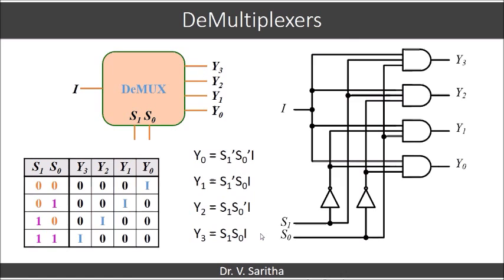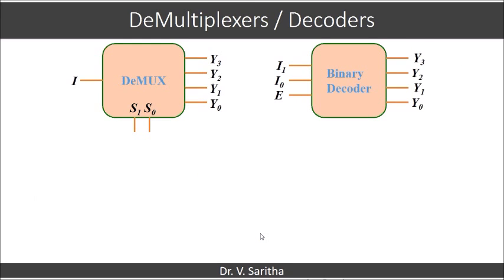Now we are supposed to draw the logic diagram for this, which we call the internal structure for the demultiplexer. If you see the relation between demultiplexers and decoders, the demultiplexer has one input, S1 S0 are selection lines, and y0 y1 y2 y3 are outputs. In the case of binary decoder, I1 I0 are inputs, E is the enable pin, and y0 y1 y2 y3 are outputs.